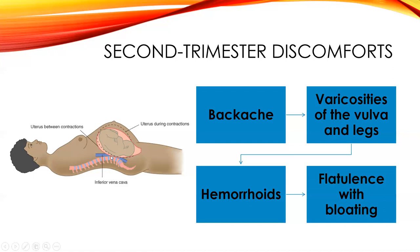Vena cava syndrome occurs as the uterus grows and women lay flat on their back — the baby puts pressure on the vena cava, which controls blood flow back to the mother's heart. This causes lightheadedness, dizziness, nausea, and general malaise. Babies don't like reduced blood supply to the mother. We recommend women don't lay flat on their back from the second trimester onward. Just placing a pillow or rolled towel under the hip — or semi-Fowler's position — is enough to get the baby off the vena cava.